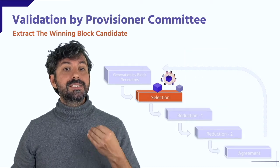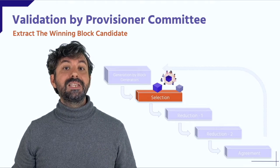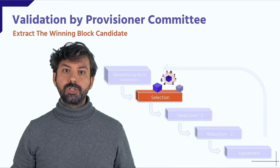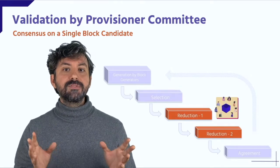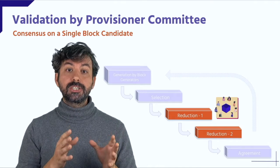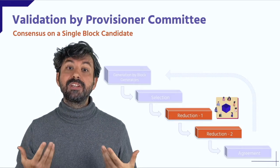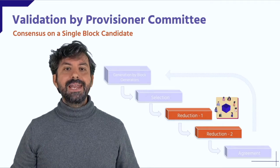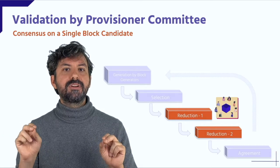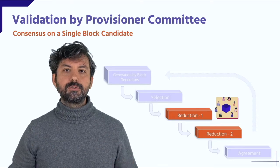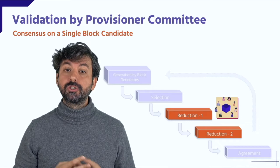The leader is the one who proposes the candidate block. Thanks to our proof of blind bid algorithm, the identity of the block generator remains anonymous throughout the entire process. At the end of the step, each node in the selection committee propagates the ID of the candidate that it saw having the highest score. It might happen that different nodes propagate different IDs due to hiccups in the network or receiving the highest score after the selection timeout.